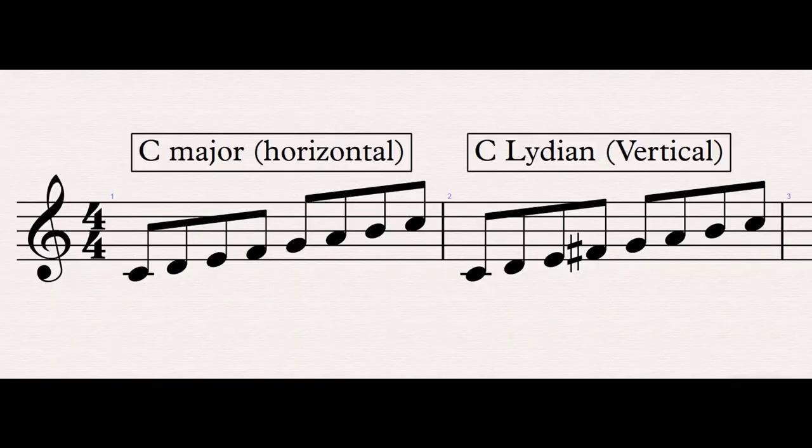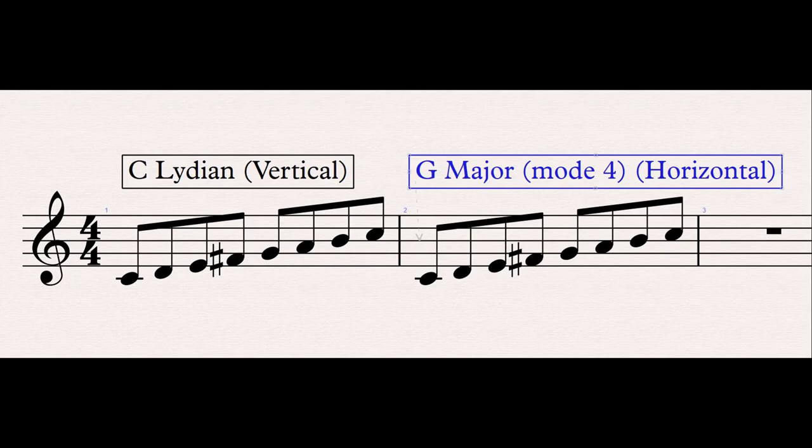Lydian scales are vertical scales and although it seems intuitive to say that they are the same as the modes of other scales because of the interval similarities, they are not the same. Lydian scales are linked very strongly to chords — chord mode — whereas the modes usually associated with them, melodic minor and the like, are horizontal scales and do not generate chords in the same way. So from the point of view of the Lydian Chromatic Concept, they are different.